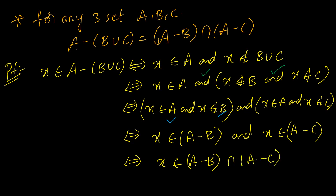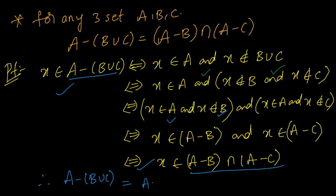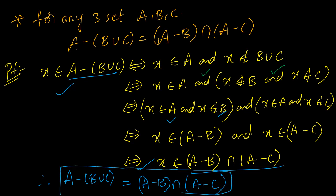X belongs to A but not B means x belongs to A minus B, and x belongs to A but not C means x belongs to A minus C. So x belongs to (A minus B) intersection (A minus C). By the equality of sets — each being a subset of the other — A minus (B union C) = (A minus B) intersection (A minus C).